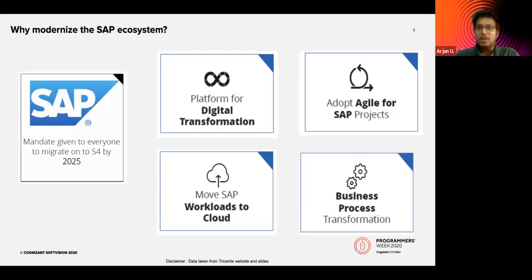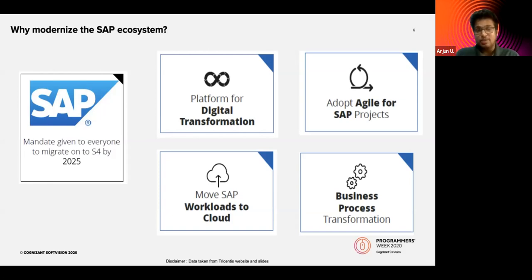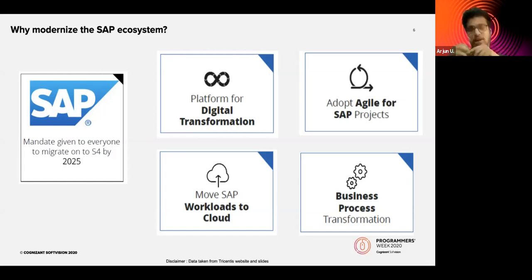So why modernize the SAP ecosystem when the old one is still working? Because SAP has given a mandate for everyone to migrate to S/4 HANA by 2025 — and just before this session, I read an article saying the deadline has been extended to 2030. Previously SAP allowed third-party database components, but SAP is stopping that — it has revoked its agreements with almost all database vendors and is promoting its own HANA in-memory relational database system.